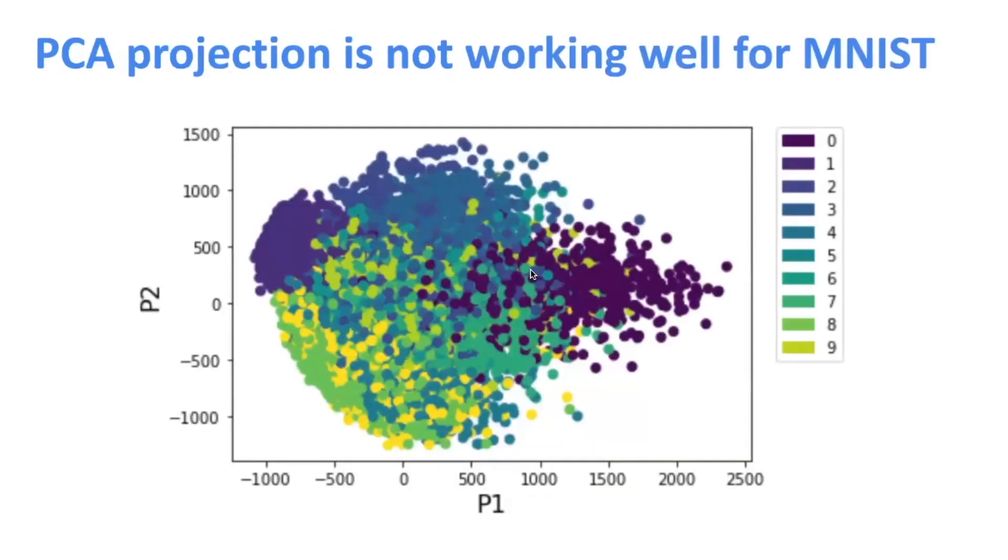So before we talked about principal components analysis. If I take this dataset and then run principal components analysis and plot the first two principal components, then this is what I get. I kind of colored the digits a little bit. So you kind of see that they do cluster by digit to a certain degree. But there's a lot of noise and randomness. So it's not really able to tease these things apart.